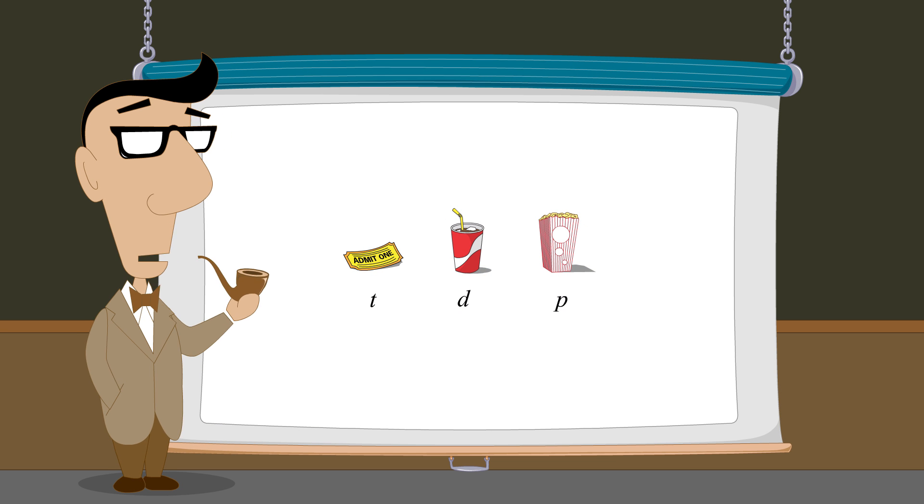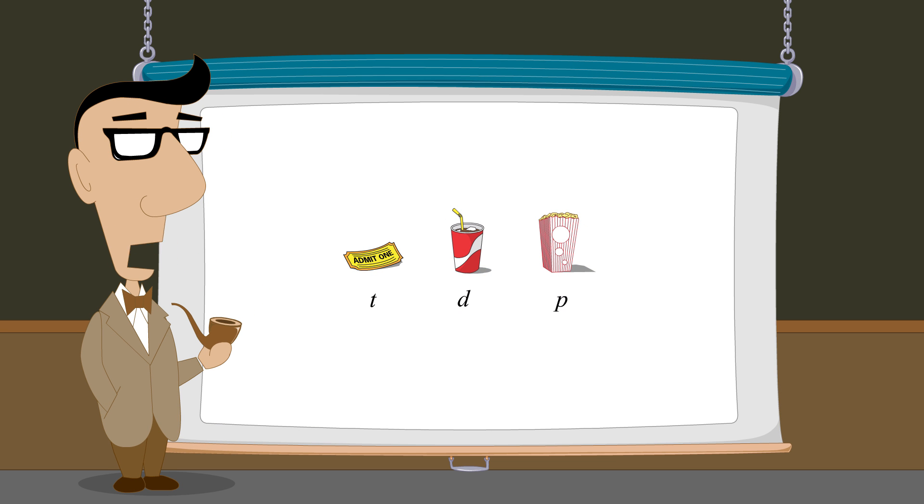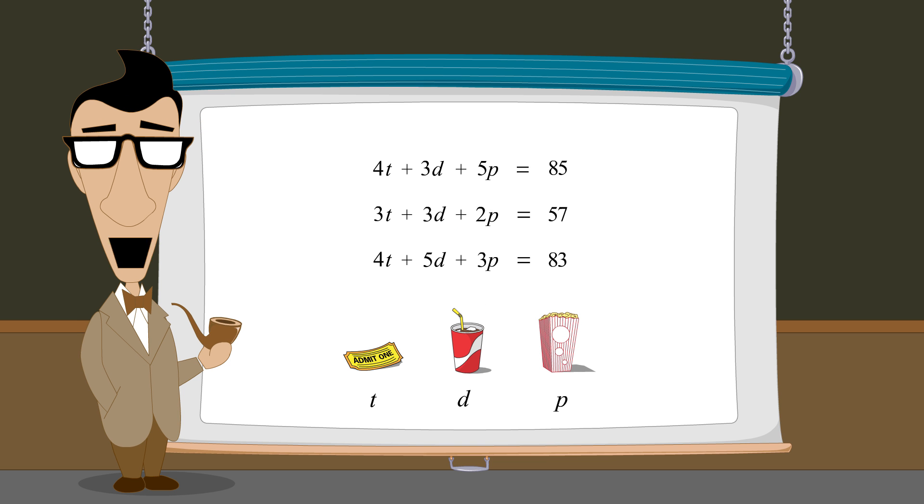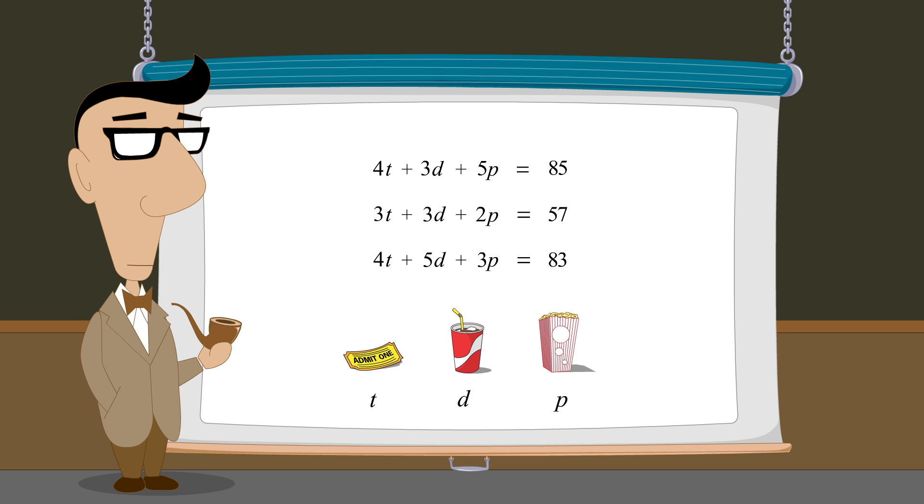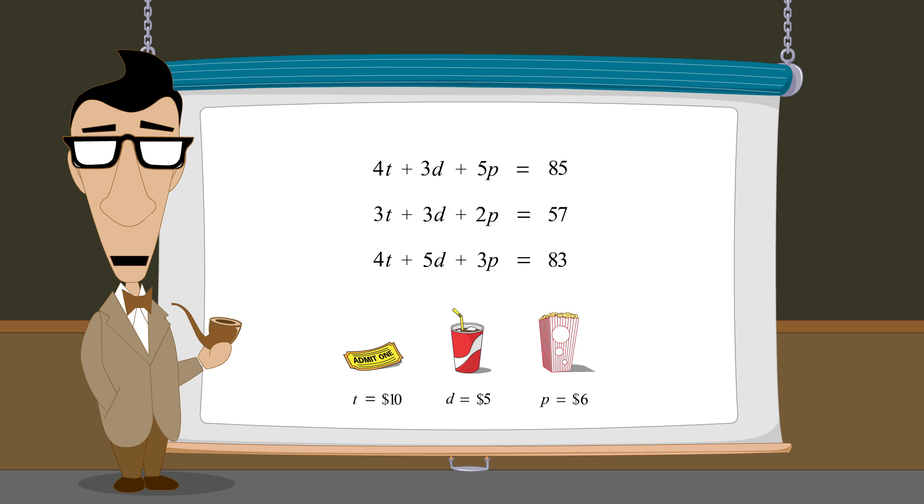In this problem, we had three unknown quantities: the price of a ticket, the price of a drink, and the price of popcorn, and we were given three mathematical relationships involving these unknowns. Since there were at least as many independent equations as unknowns, it was possible to pin down specific values for each quantity. Together, these three values form the single unique solution to this system of equations.